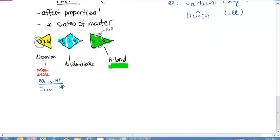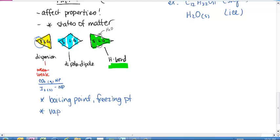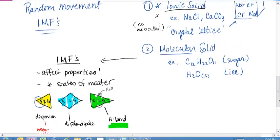Some properties that can be affected by intermolecular forces: boiling point — how easily those molecules can separate from each other; freezing point — how easily those molecules can be attracted to each other; vapor pressure — how easily something can evaporate (if it can escape easily, it probably has weak forces); and eventually we'll look at solubility — whether something can dissolve in something else is very much influenced by intermolecular forces.